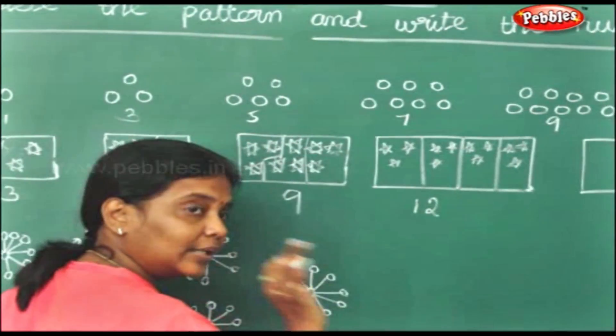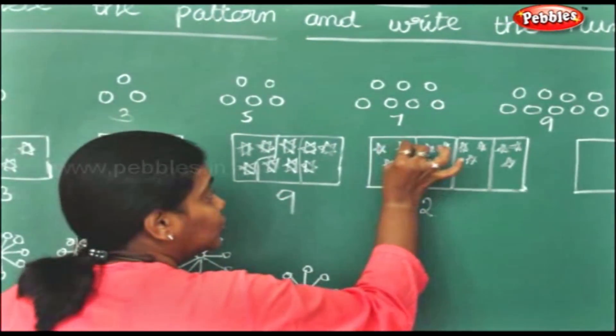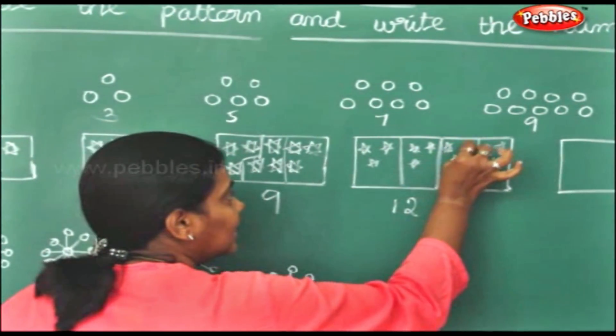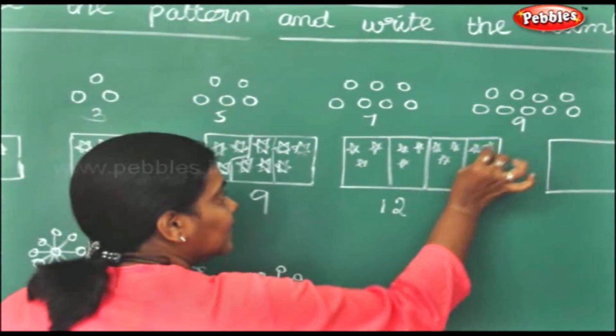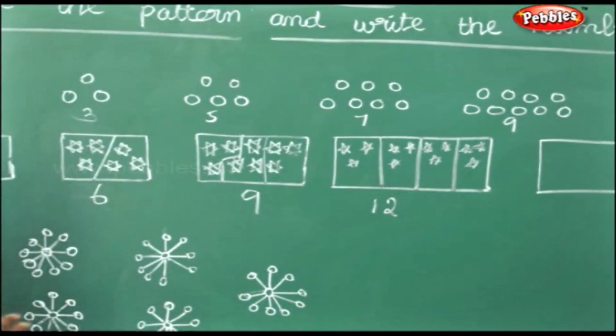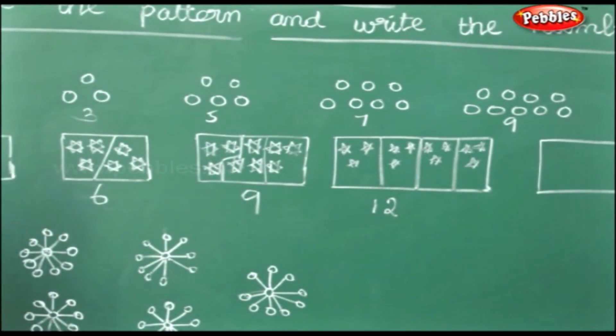Even when you count the stars you will get 12 only: 1, 2, 3, 4, 5, 6, 7, 8, 9, 10, 11, 12. So this is the 3 times table in a pattern.